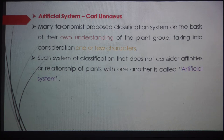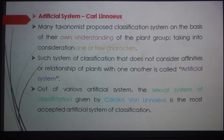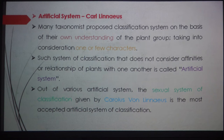The classification system which does not consider the affinities or the relationship of plants with one another is the artificial system. Out of various artificial systems, the sexual system of classification given by Carolus Linnaeus is the most accepted. Before Linnaeus, certain taxonomists gave classification systems based on artificial characters — called artificial because they do not take into consideration all morphological characters, only one or two. It also does not include any natural affinities or relationships between different taxa. That is why it is called the artificial system of classification.